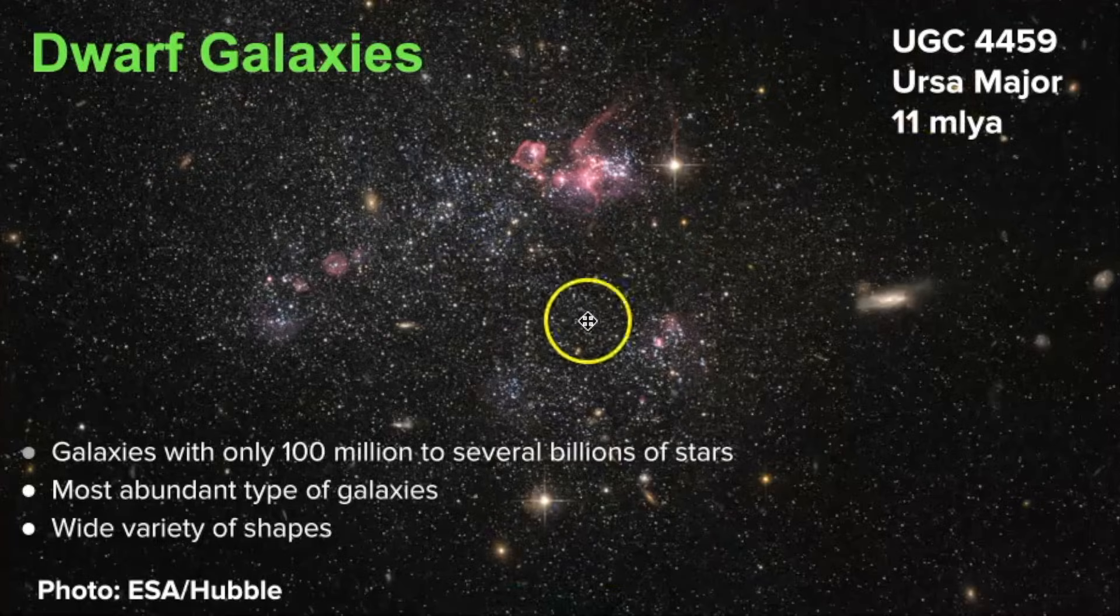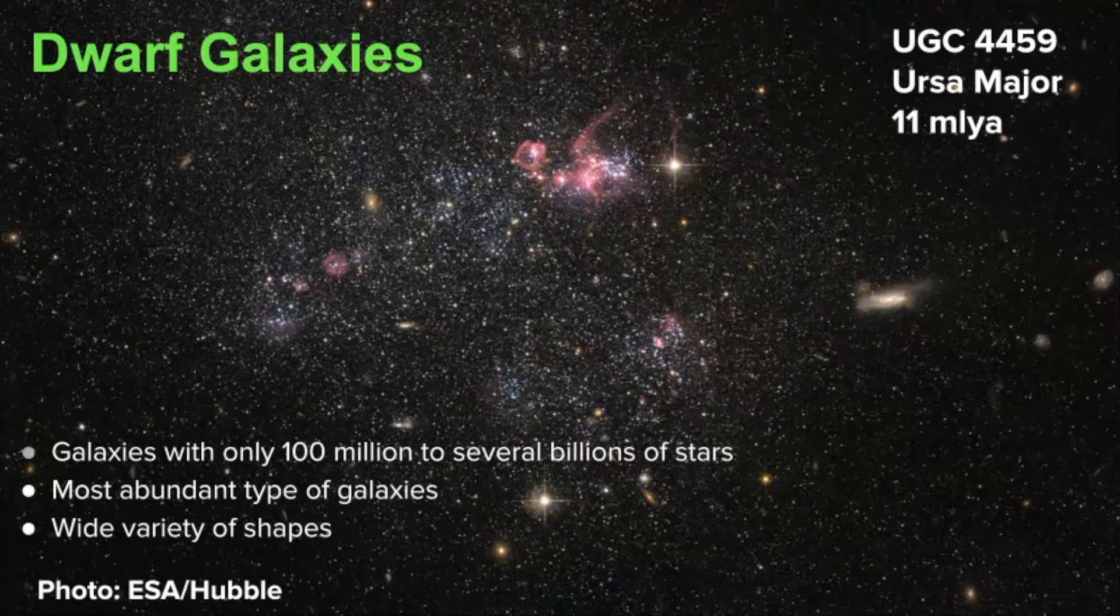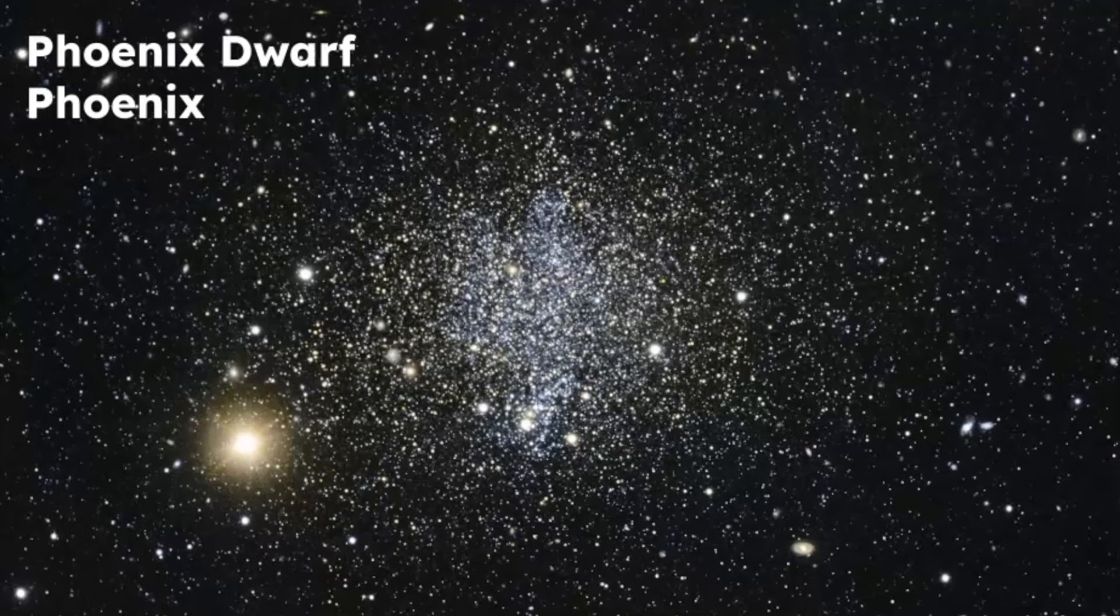Here's an example of a dwarf galaxy. They're very abundant and they have a wide variety of shapes. Here is the dwarf galaxy DDO 68 in the constellation of Leo, and here's the Phoenix dwarf galaxy in the Phoenix constellation.